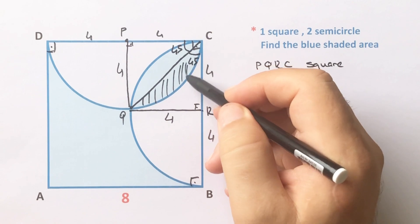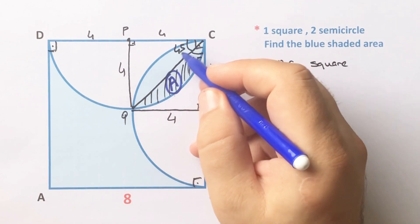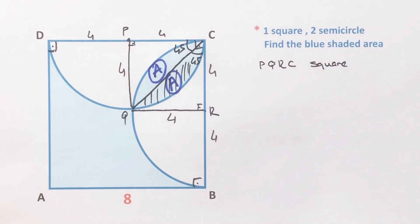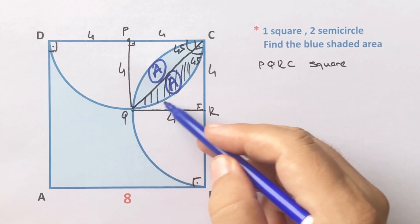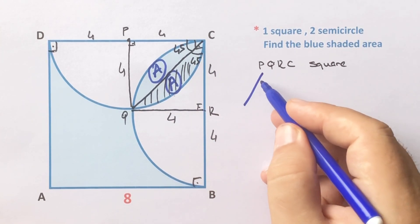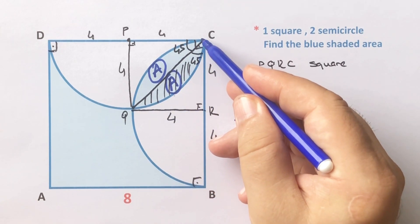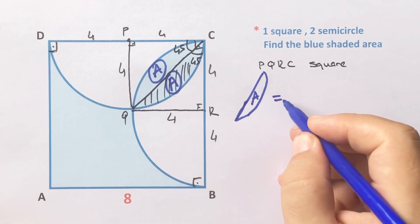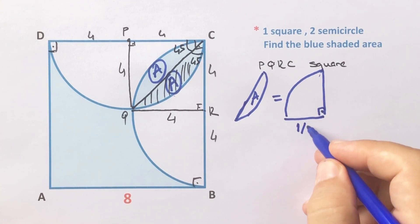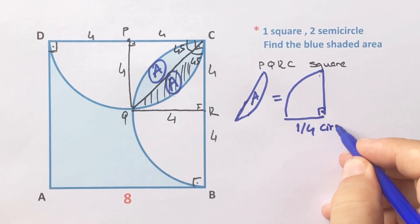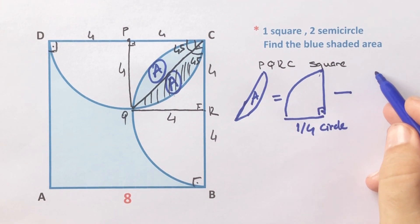This area I'm going to represent with uppercase A, and here is also uppercase A because they have the same chord. The area of region A equals this quarter circle area — let's draw it here — minus this triangle area.